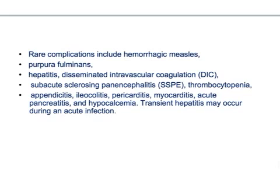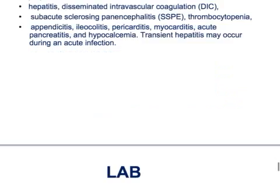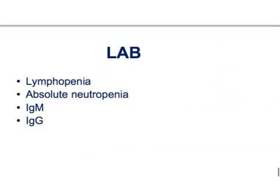Other complications include thrombocytopenia and appendicitis. Appendicitis occurs because the measles virus enters the lymphatic system, multiplies in the lymphatics, spreads throughout the body, and can reach the appendix causing appendicitis.